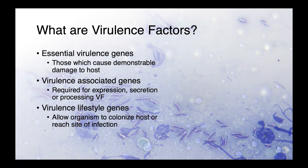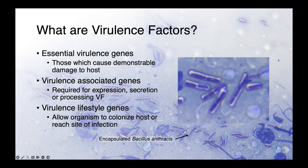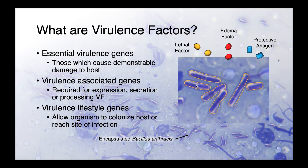The background of this slide shows encapsulated Bacillus anthracis — the cause of anthrax. Zooming in, you can see rod-shaped bacteria surrounded by a lucent area — this is a capsule that protects the organism from phagocytosis by the innate immune system, acting as a virulence lifestyle gene. It allows survival within the host, and then the organism produces lethal factor, edema factor, and protective antigen. Lethal factor and edema factor, once internalized into host cells, are responsible for disease itself — these are essential virulence genes. Protective antigen acts as a shuttle protein, bringing lethal factor and edema factor into the cell, making it more of a virulence-associated gene.